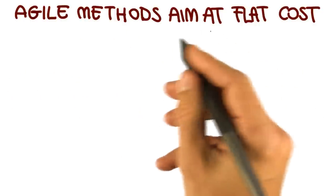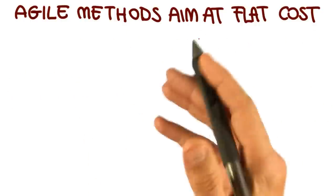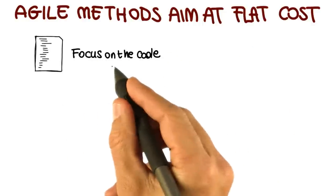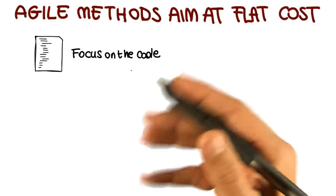In a nutshell, agile methods aim at flat cost and at decreasing traditional overhead by following a set of important principles. The first principle is to focus on the code, rather than the design, to avoid unnecessary changes.